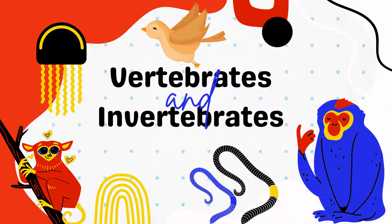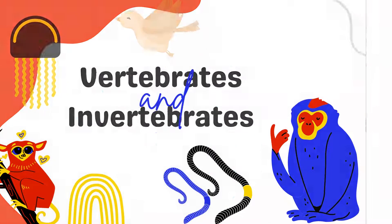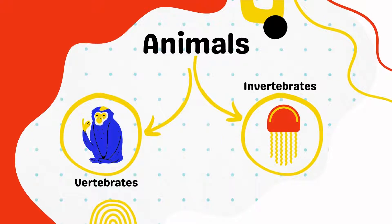Vertebrates and Invertebrates. There are two types of animals: vertebrates and invertebrates.